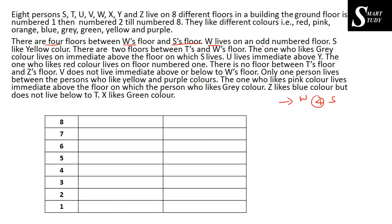The next information is W lives on an odd-numbered floor. The odd-numbered floors are floor number one, three, five, and seven. One thing is sure — we cannot place W on floor number five. If W is on floor five, there should be a gap of four floors between W and S, but we cannot place S below floor number one. And going above there are only three floors, so there would not be a gap of four floors. Therefore W can only be on floor number one, three, or seven.